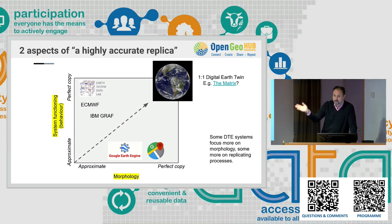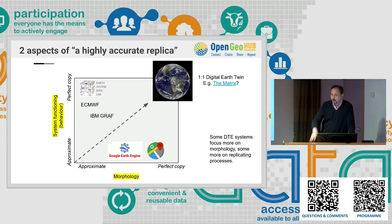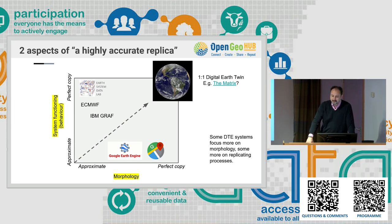It's purely geodata — the most current geodata put in a system and shared. Some systems focus more on morphology, some on processes. And as you imagine, if you go in the middle and get the perfect copy that you cannot recognize as a copy — it's not the real world — and if you also copy the behavior so you can play the system, then you have the matrix. So a one-to-one digital earth twin.